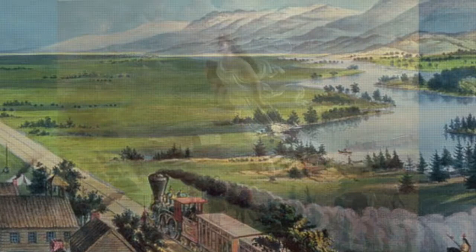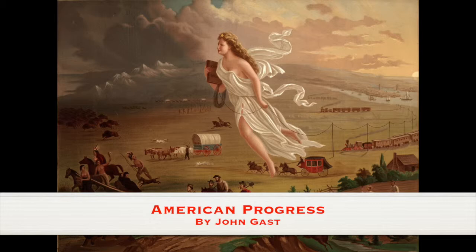This Manifest Destiny painting called American Progress: Spirit of the Frontier was painted in 1872 by John Gast. The painting is an allegory of Manifest Destiny. An allegory is a visible symbol representing an abstract idea. Look closely at the painting. What images do you see? What messages and values are conveyed by this painting?